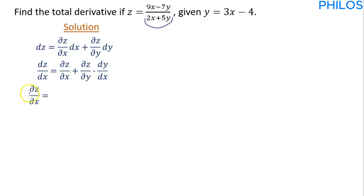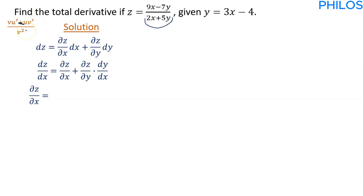To find partial z partial x, we take the partial derivative of z with respect to x. Looking at the function z equals (9x minus 7y) over (2x plus 5y), the best approach is to use the quotient rule, which states: v times u prime minus u times v prime, all divided by v squared.